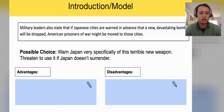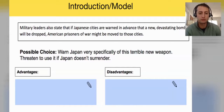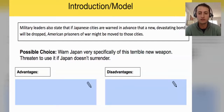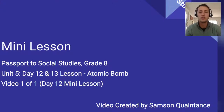Next, you're going to do this on your own. Read the short blurb, which gives you a little bit more information, and add advantages and disadvantages for the new possible choice. Your second possible choice is: warn Japan very specifically of this terrible new weapon and threaten to use it if Japan doesn't surrender. You have four possible choices, so you're going to work through this for each one.